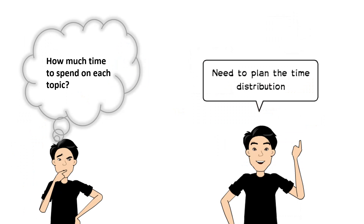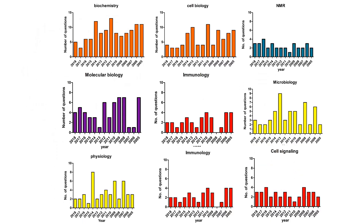The first question is how much time to spend on each topic, and you definitely need to plan your time distribution. Here is the overall statistics of all the biology topics asked in IIT JAM Biotechnology. Among them, there are at least nine very important topics including biochemistry, cell biology, NMR, molecular biology, immunology, microbiology, physiology, and cell signaling.